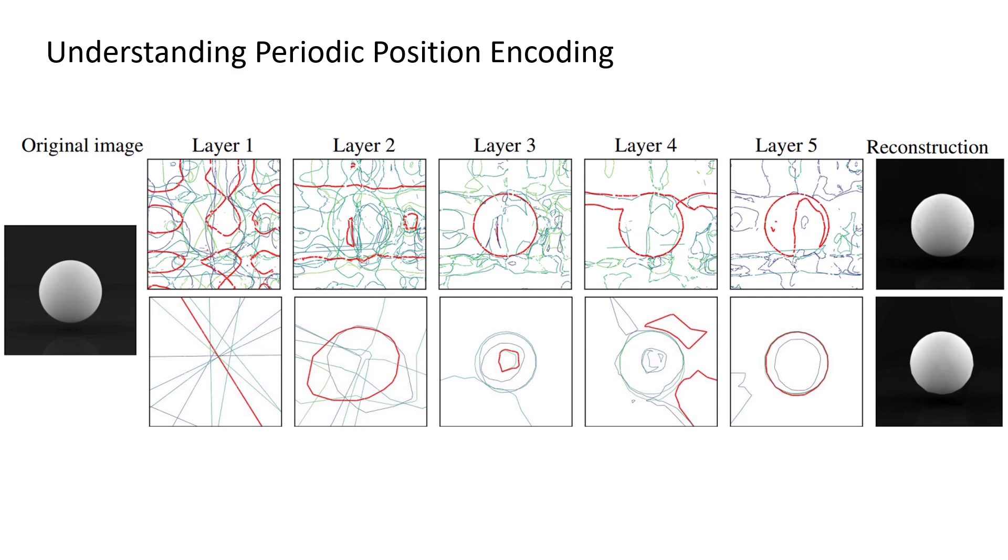We see that with positional encoding, ReLU neurons, especially from the shallower layers, are repeated periodically in the input space, because positional encoding wraps up the input space. This makes neurons share more weight across non-contiguous parts of the input space, which can possibly be attributed to better convergence.